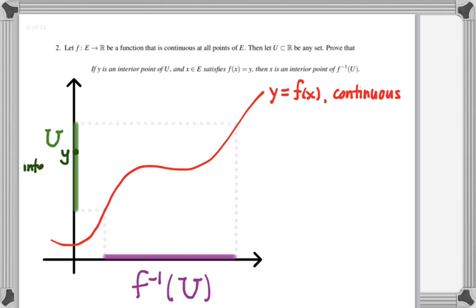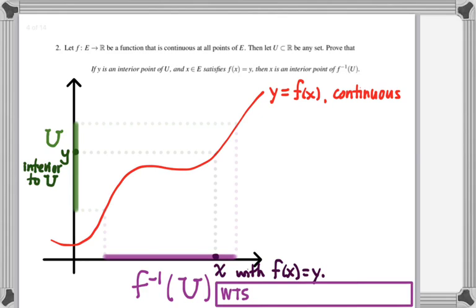So what we're trying to do is show that if I pick a point which is an interior point of U and if x is a point that satisfies f of x is equal to y, then what we need to show is that x is an interior point of the inverse image of U, f inverse of U.